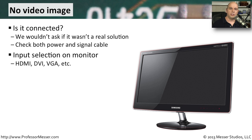Our monitors these days can plug into so many types of video connections — it might be an HDMI connection, an old school VGA connection, or DVI as the video signal. But monitors generally don't automatically determine where the signal's coming from. You have to tell the monitor what's plugged in, and if you haven't configured that properly, you're obviously not going to see anything on the screen. There's usually a button on the monitor that allows you to choose the correct input, so make sure the input from your computer matches the configuration of that monitor.